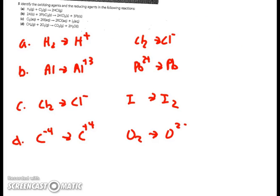I've written in the half reactions for each reaction in question 5, and you're identifying the oxidizing agent and reducing agent. Hydrogen is being oxidized, making it a reducing agent. Chlorine is being reduced, making it an oxidizing agent. On B, aluminum is being oxidized, so it's a reducing agent. Lead is being reduced, making it an oxidizing agent.